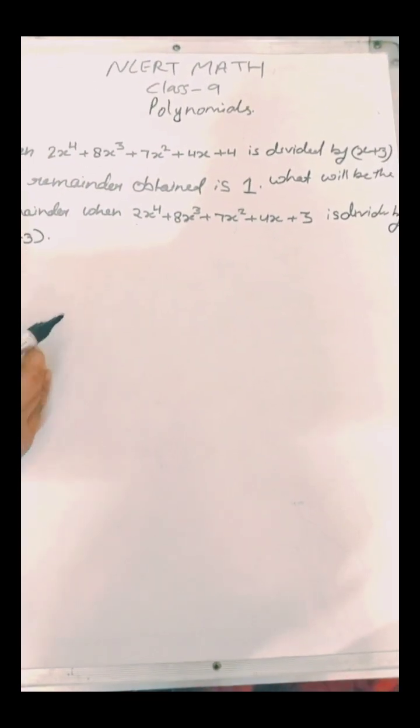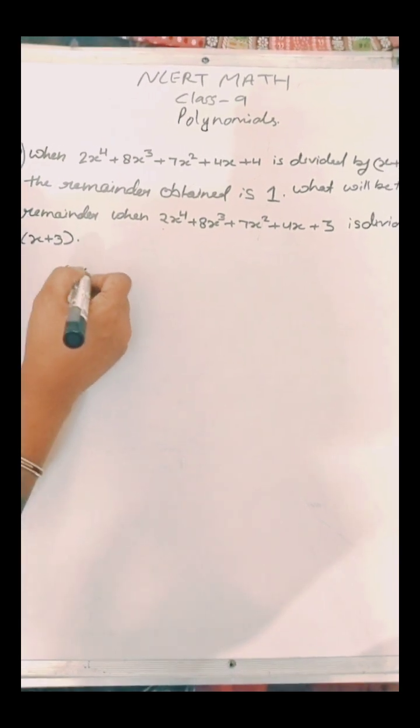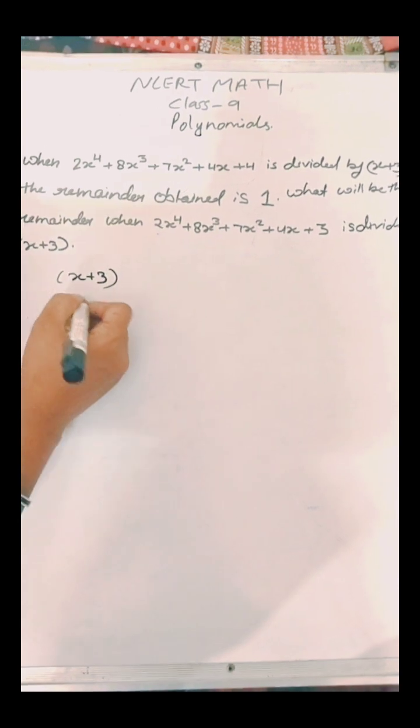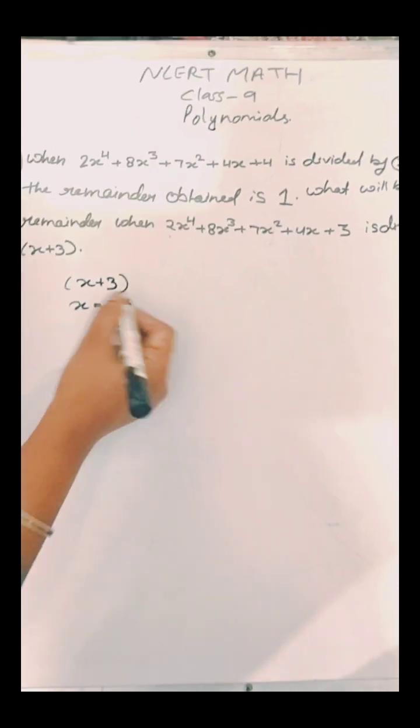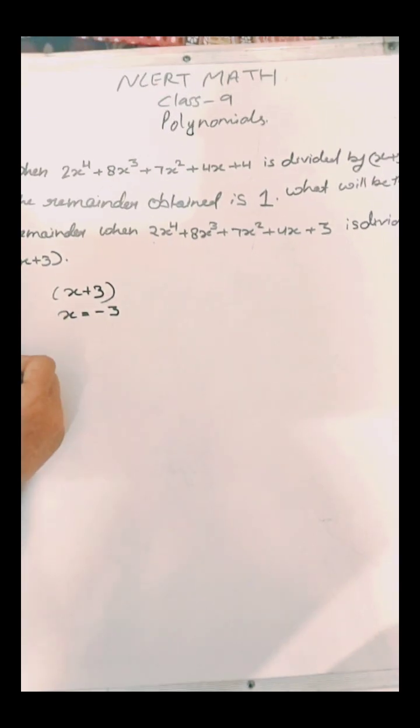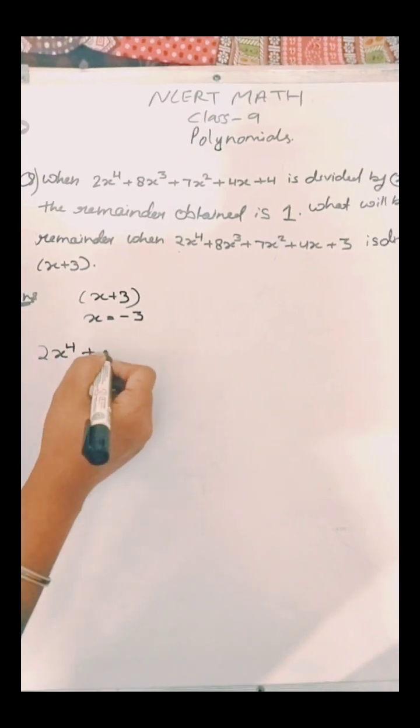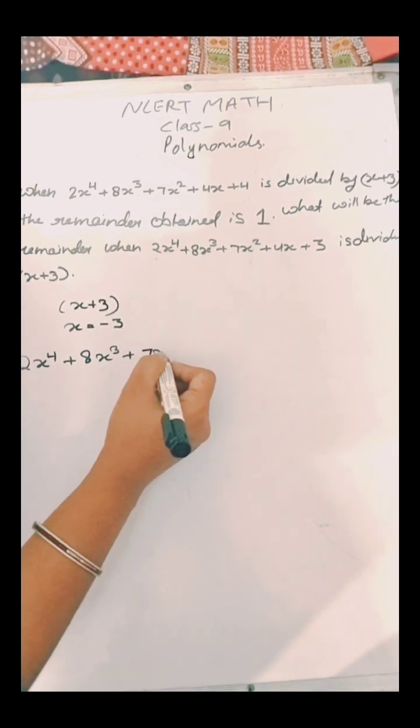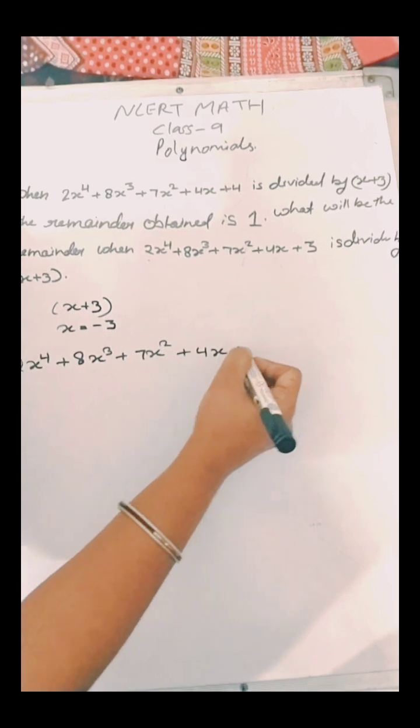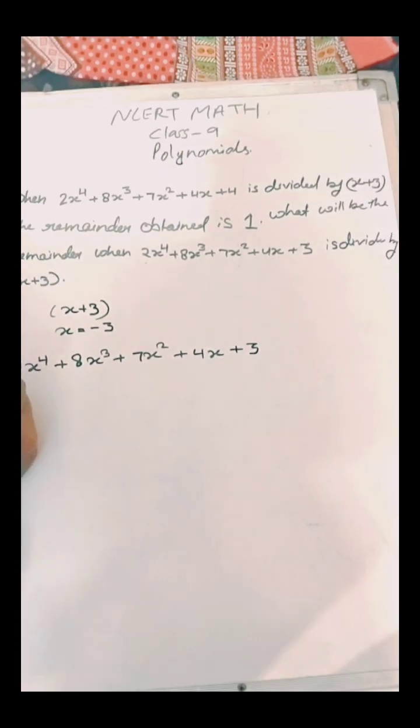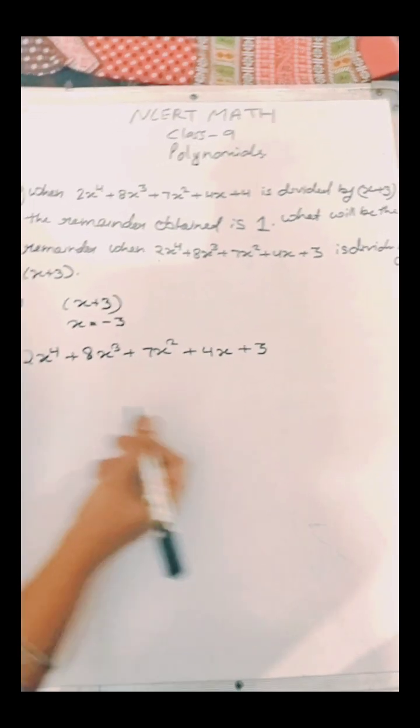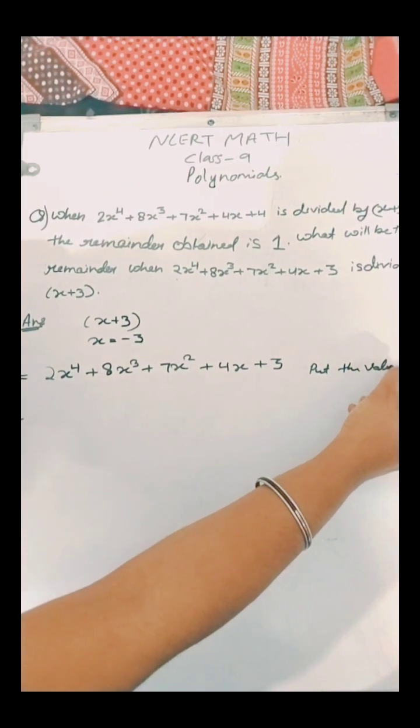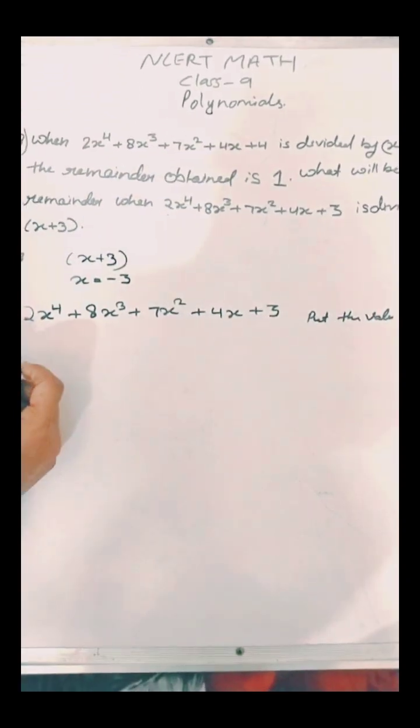So now if we divide and find the value of x, then we will get minus 3. And now we will think that if we divide 2x raised to power 4 plus 8x raised to power 3 plus 7x squared plus 4x plus 3 by putting the value of x, then we will get the answer.